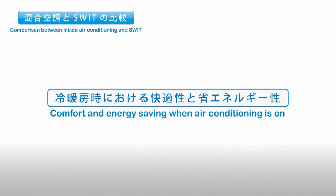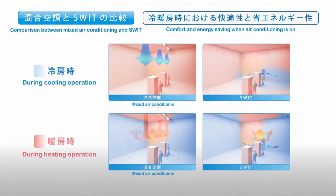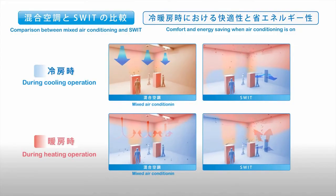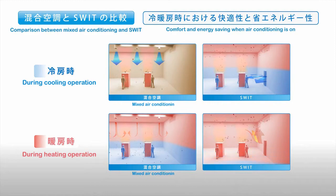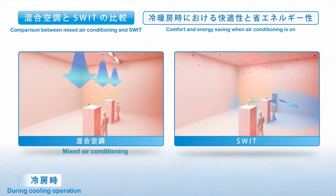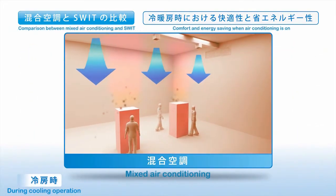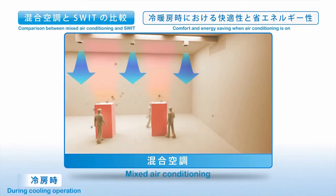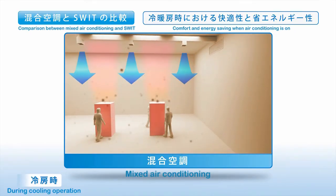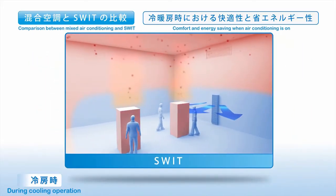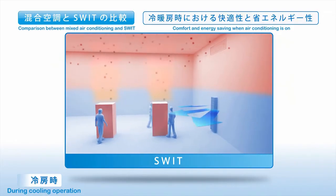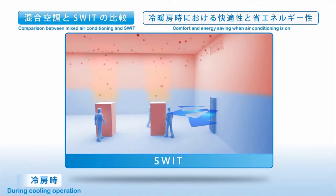Comfort and energy efficiency when air conditioning is on. Comparing SWIT with Mixed Air Conditioning during cooling and heating — during cooling, Mixed Air Conditioning uses a lot of energy since it cools the higher, non-inhabited areas of the space. SWIT efficiently cools only the living area by utilizing the nature of how cool air sinks.